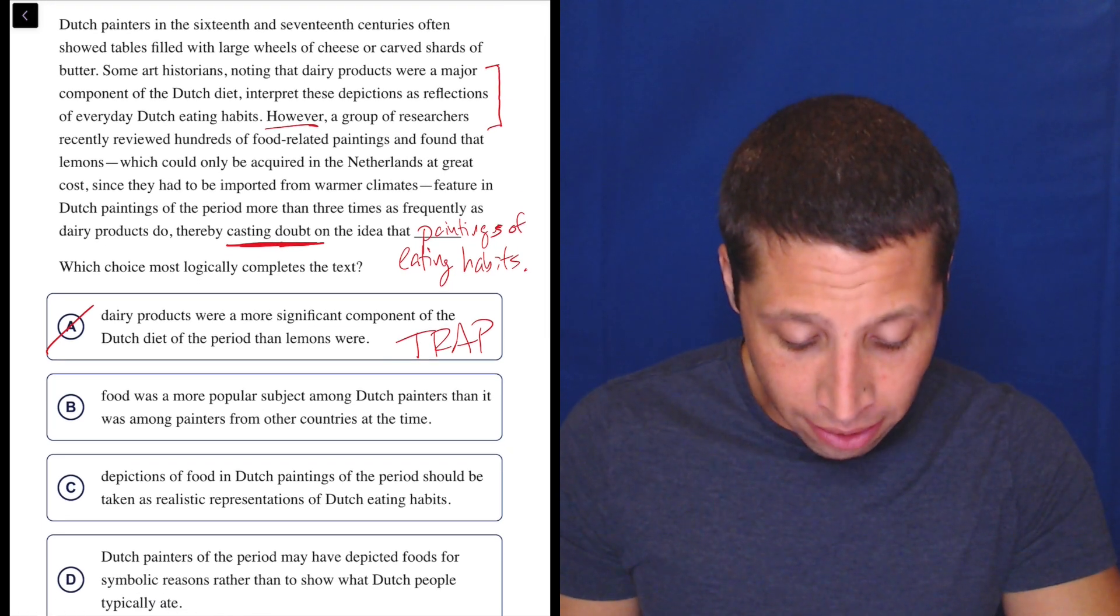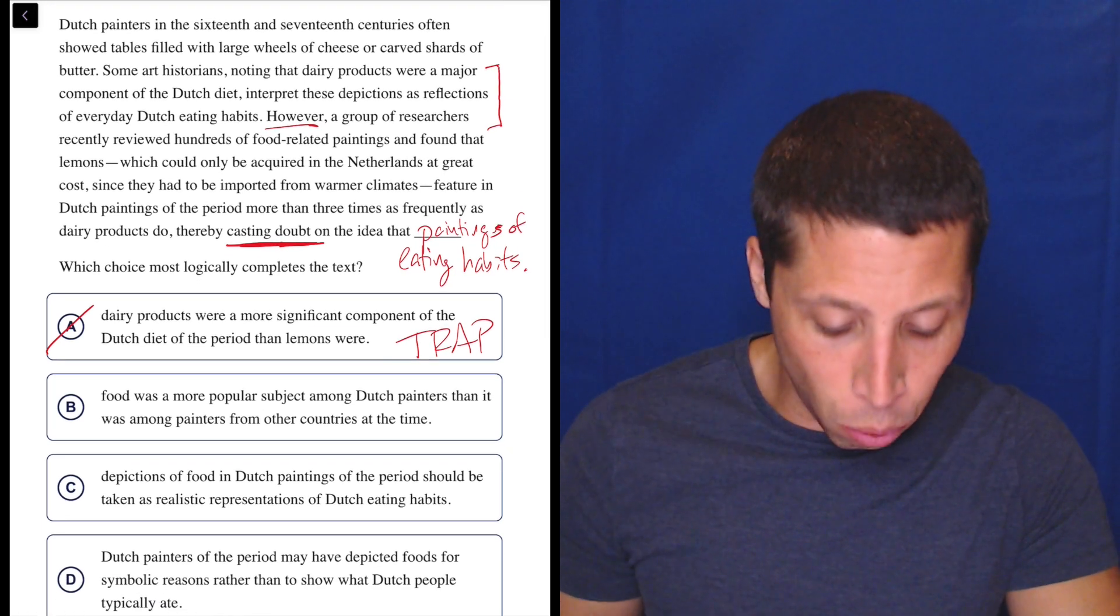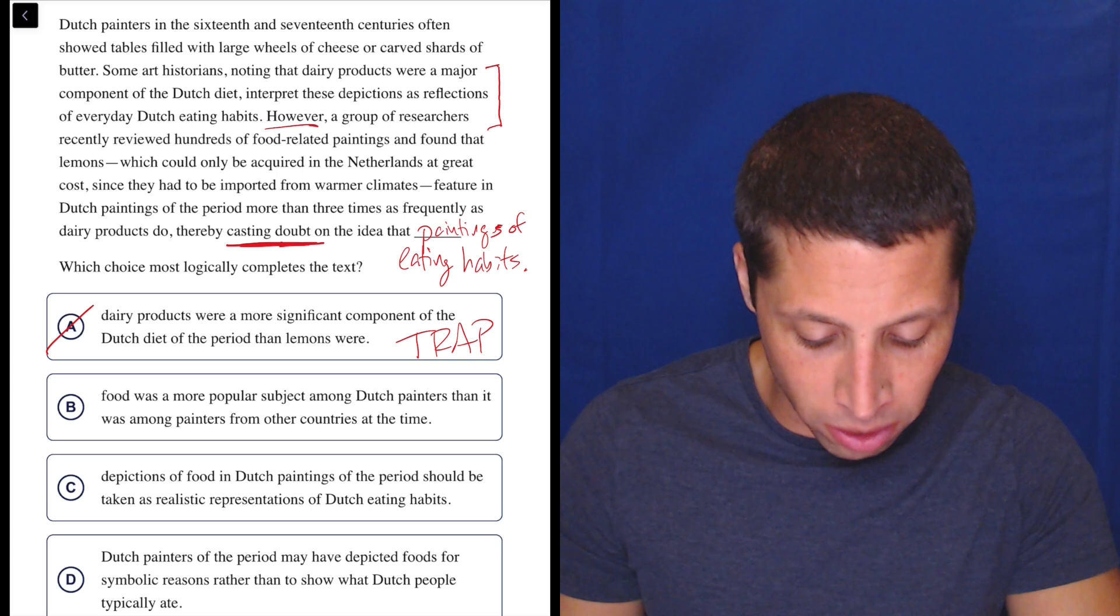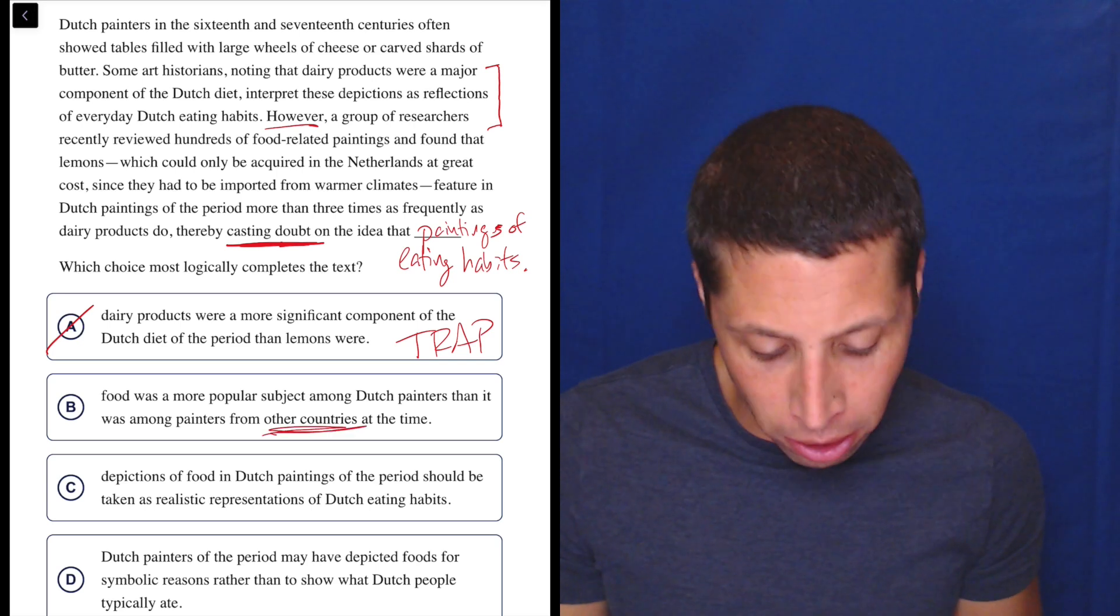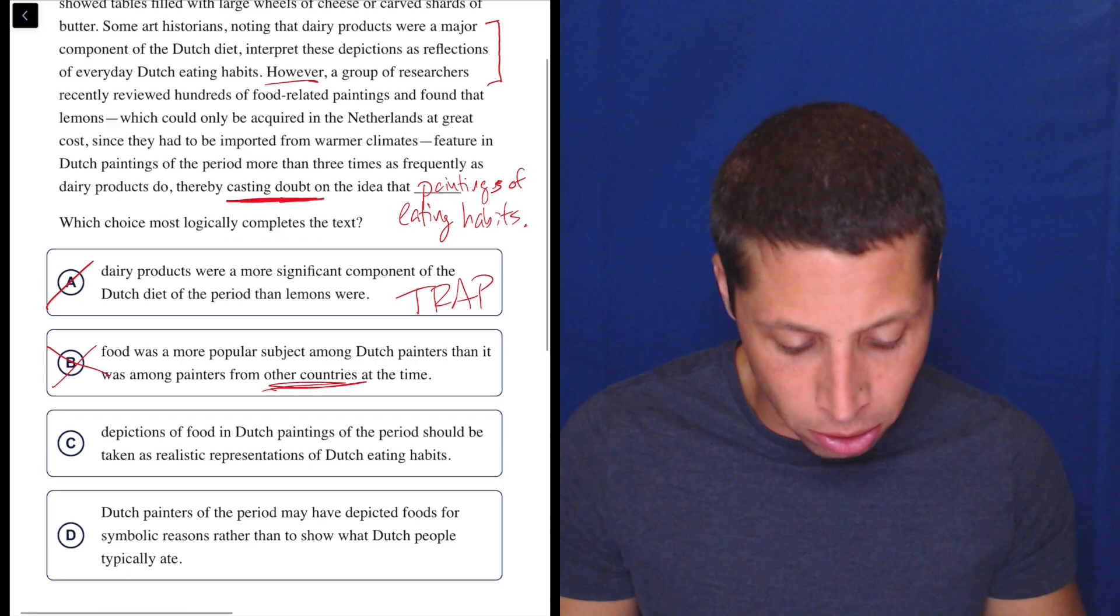B, casting doubt on the idea that food was a more popular subject among Dutch painters than it was among painters from other countries. They don't talk about other countries. That's a comparison I don't care about. So that's easy to get rid of.